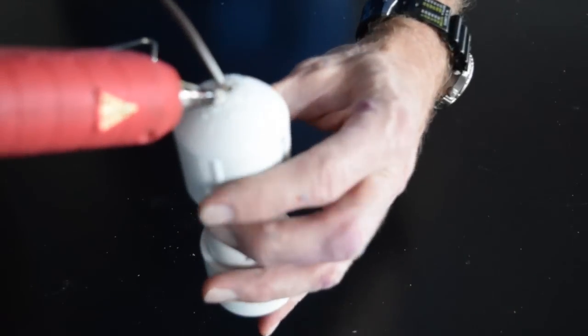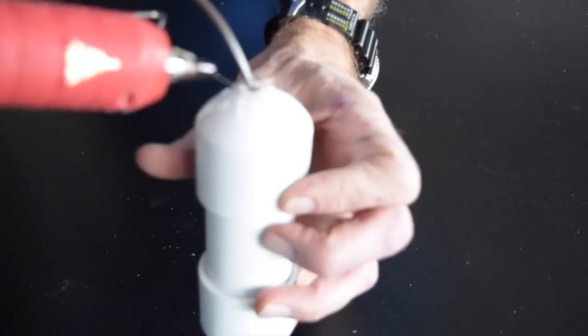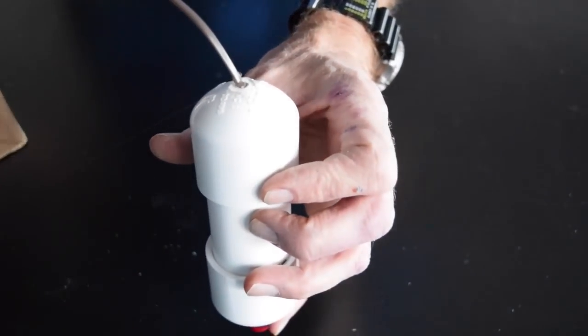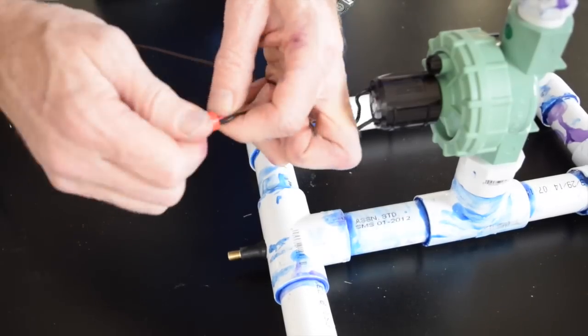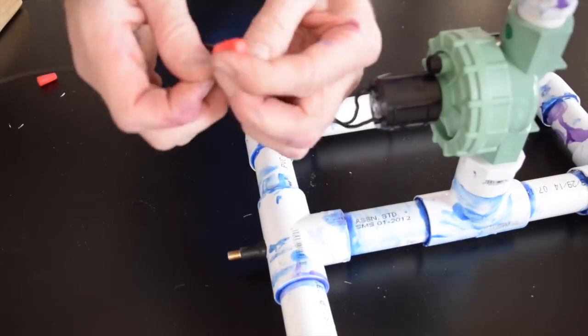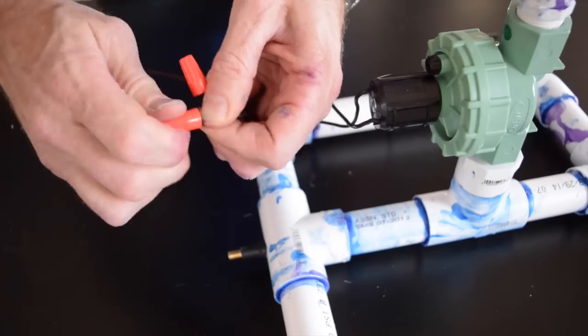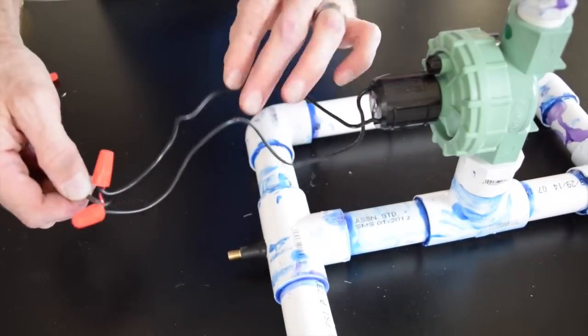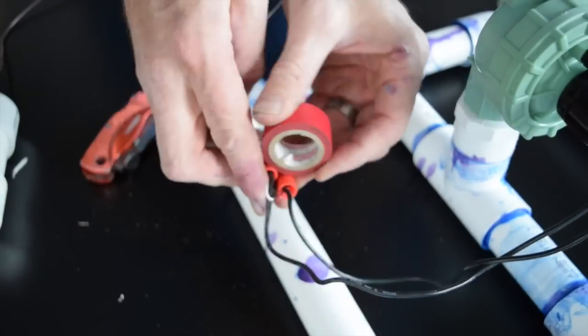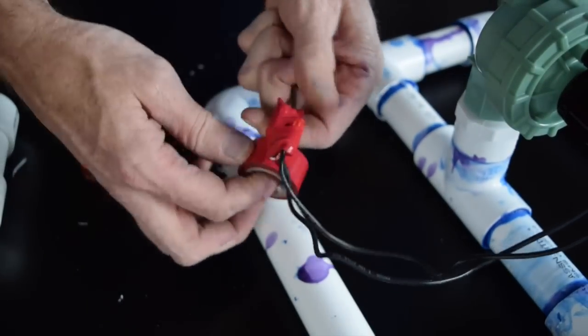I used a bit of hot glue where the wire exits the launch controller to hold the wire in place. The wire coming out of the launch controller was attached to the wires on the sprinkler valve using wire nuts. The order they are attached does not matter. I then used electrical tape to make the wire nut connection a bit stronger.